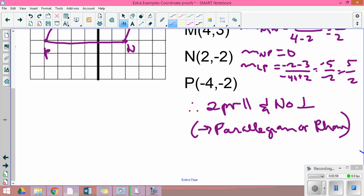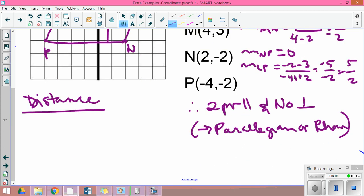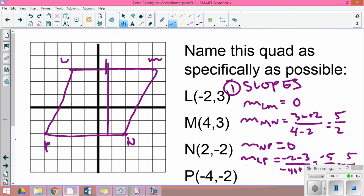At this point I either have a parallelogram or a rhombus, and the only way to tell the difference between those is the distance, the length of the sides. Now I don't have to do the distance of all of them. I know in a parallelogram that opposite sides are equal by one of our properties. What I care about is if I can prove consecutive sides are equal.